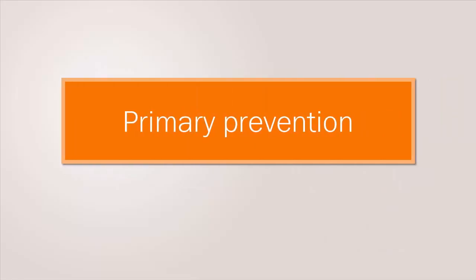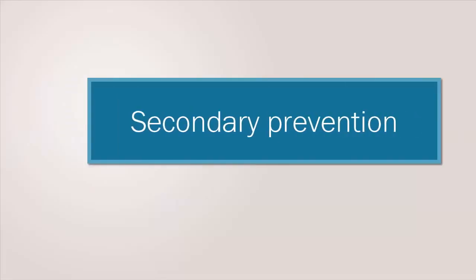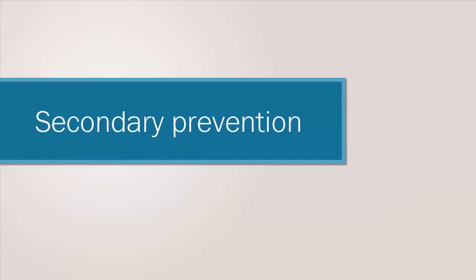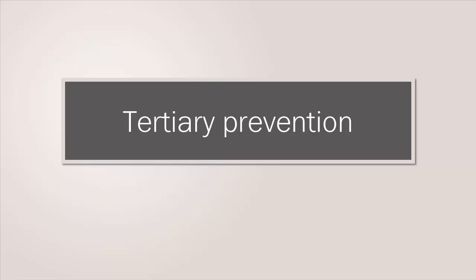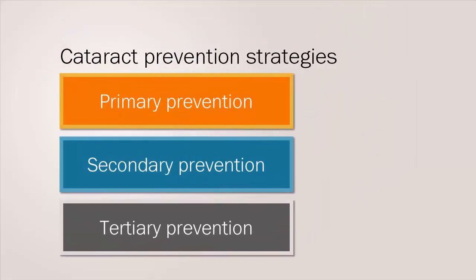Primary prevention strategies protect healthy people from even developing a disease. Secondary prevention aims to halt or slow the progression of disease through early intervention or risk reduction. And tertiary prevention targets people who already have the disease and stops deterioration, impacting on patients' quality of life.